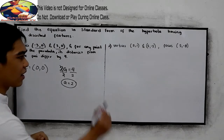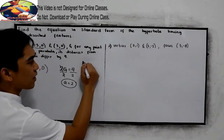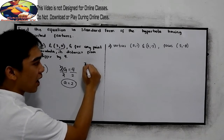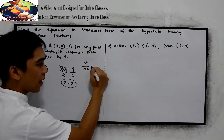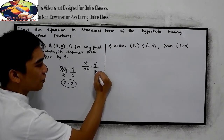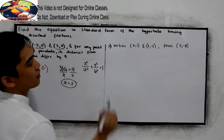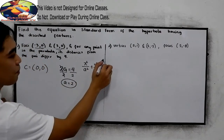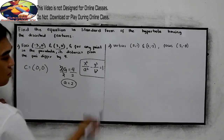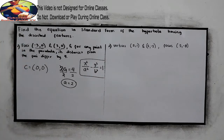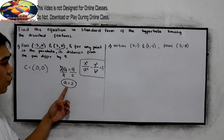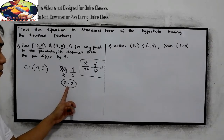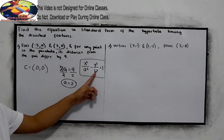we're expecting that our standard form can be x² over a² minus y² over b² equals 1. We are expecting this form. Now, we have a value for a; what we need to do is find the value for c, and of course, b.